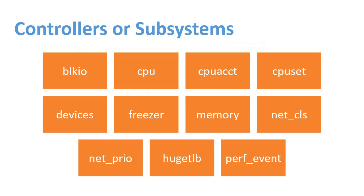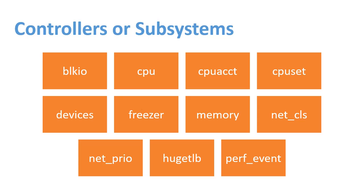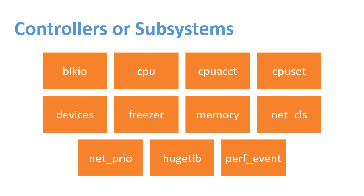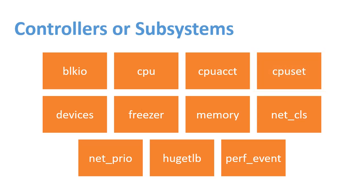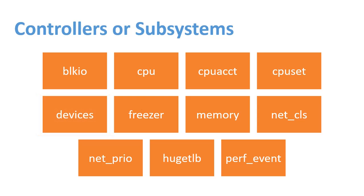The most common cgroup subsystems are: BLKIO, which sets limits on input or output access to and from block devices such as physical drives, disk, solid state, or USB. CPU, which uses the scheduler to provide CPU time slots to tasks. CPU_ACCT, which generates automatic reports on CPU resources used by tasks. CPUset, which assigns individual CPUs on a multi-core system and memory nodes to tasks. Devices, which allows or denies access to devices by tasks.